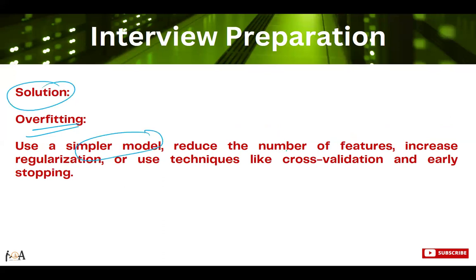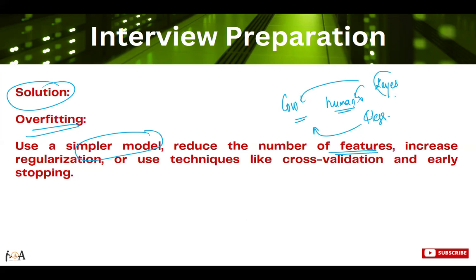The solution for overfitting is to use a simpler model and reduce the number of features. For example, if you want to differentiate between a cow and a human, four legs is a strong feature — four legs typically means a cow, not a human. But a feature like 'two eyes' is not useful because both humans and cows have two eyes. Such redundant features should be removed, as they may perform well on training data but cause difficulty on unseen data. Other solutions include increasing regularization or using techniques like cross-validation and early stopping.